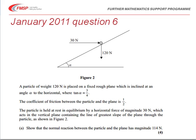Initially the particle is held at rest by a horizontal force of magnitude 30 newtons which acts in a vertical plane containing the line of greatest slope of the plane through the particle. All of that information is shown in Figure 2. We're asked first to show that the normal reaction between the particle and the plane has a magnitude of 114 newtons.